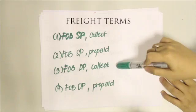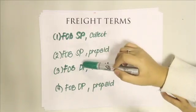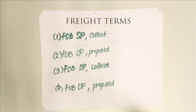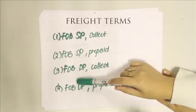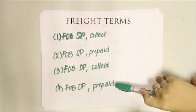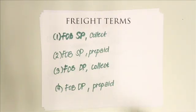For the third possibility, if FOB destination point and collect, the seller has the obligation to pay freight but the buyer paid, meaning the seller has an obligation towards the buyer. Lastly, if FOB destination point and prepaid, the seller has the obligation and the seller paid the freight — meaning the seller does not owe the buyer any obligation, and the buyer does not owe the seller anything.